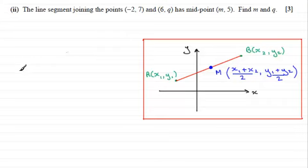So following that idea then we've got that (m, 5), the midpoint, must be equal to, well, taking these two points here.